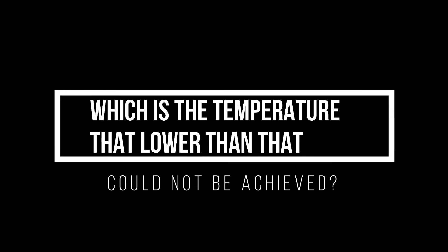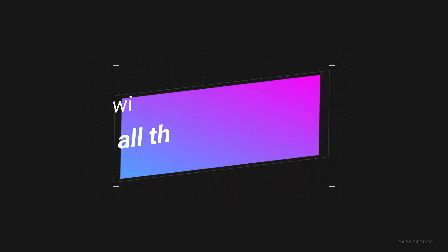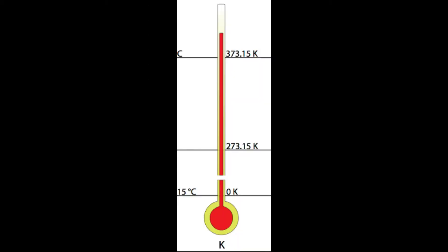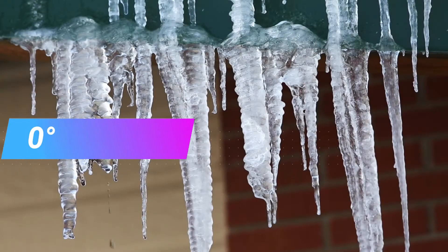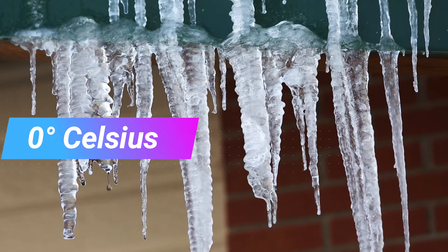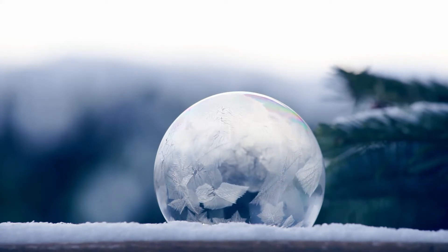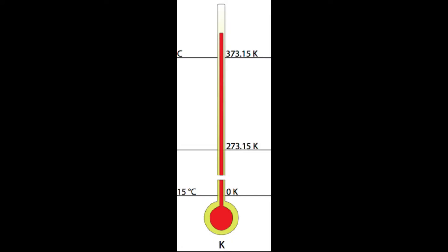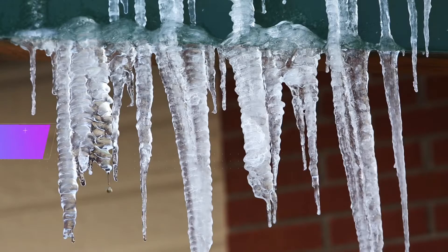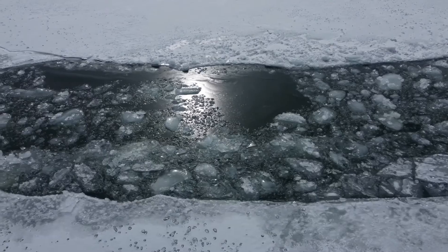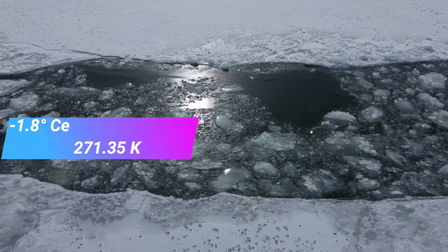Which is the temperature below which nothing can go? I will answer all these questions in this video. I will use two temperature scales: Celsius and Kelvin. Let's start with 0 degrees Celsius, which is the freezing point of water — at this temperature the molecules of water start changing from liquid to solid. In the Kelvin scale, 0 degrees Celsius equals 273.15 Kelvin.